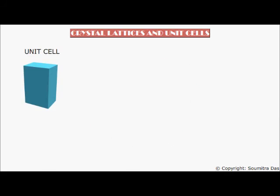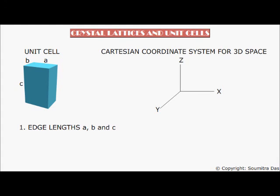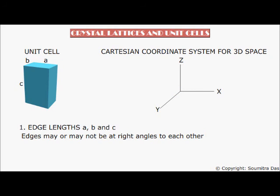The unit cell is categorized by the edge lengths A, B, and C. The edges A, B, and C more or less correspond to the X, Y, and Z axes of the three-dimensional coordinate axis. The only difference is that edges may or may not be at right angles to each other, whereas the X, Y, and Z coordinate axes are at right angles to each other. The unit cell is also described by the axial angles alpha, beta, and gamma — alpha being the angle between edges B and C, beta being the angle between edges A and C, and gamma being the angle between edges A and B.